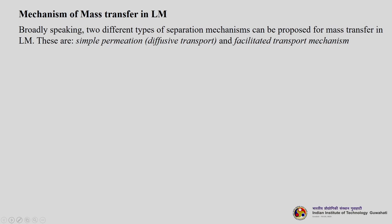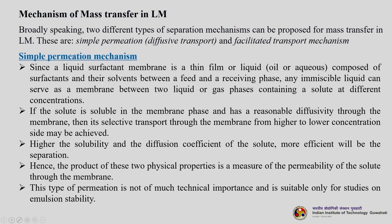Broadly speaking, two different types of separation mechanisms can be proposed for mass transfer in liquid membranes: simple permeation due to diffusive transport, and facilitated transport mechanism. In simple permeation, since a liquid surfactant membrane is a thin liquid film composed of surfactants and solvents between feed and receiving phases, any immiscible liquid can serve as a membrane. If the solute is soluble in the membrane phase and has reasonable diffusivity, selective transport from higher to lower concentration may be achieved. Higher solubility and diffusion coefficient give more efficient separation. This type is not of much technical importance and is suitable only for lab scale emulsion stability studies.